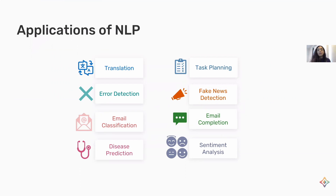The ultimate objective of natural language processing is to read, decipher, understand, and make sense of human language. Some of its applications in our daily lives are translation, help with planning tasks, fake news and error detection, and email classification and completion. NLP can also be used for parsing medical records and predicting diseases, or going through texts and journals and analyzing the sentiments.